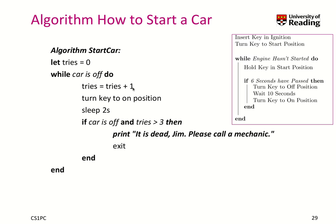Let's assume the car is off initially. We set tries to tries plus one — this is an assignment, not mathematical equality; you take the right-hand value, which is zero, add one, making it one. Now tries is one, we turn the key to the on position, we sleep for two seconds. Let's assume the car remains off. Tries isn't three yet — it's one — so we don't go to the mechanic condition; we go back to the while loop.